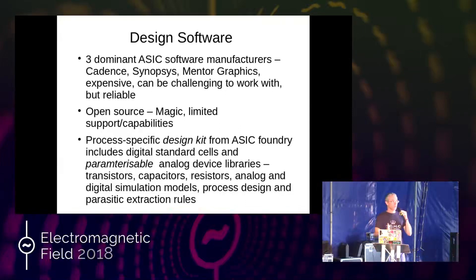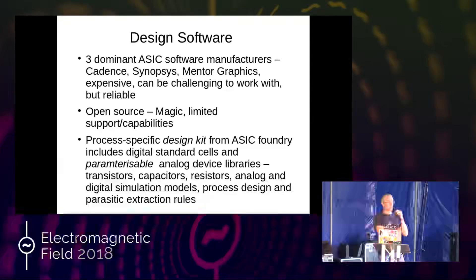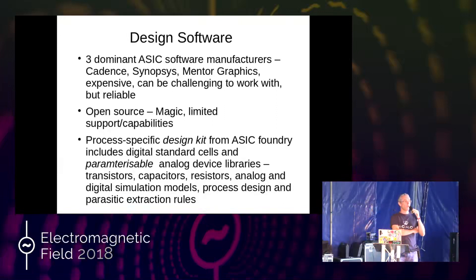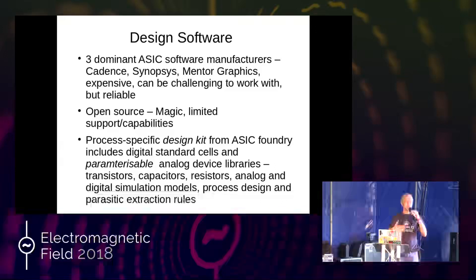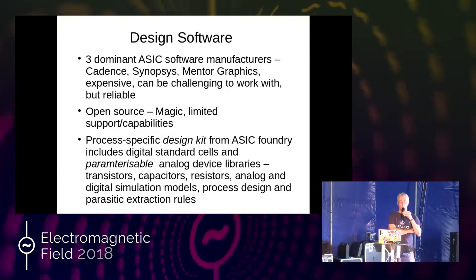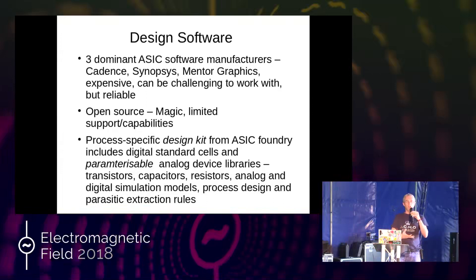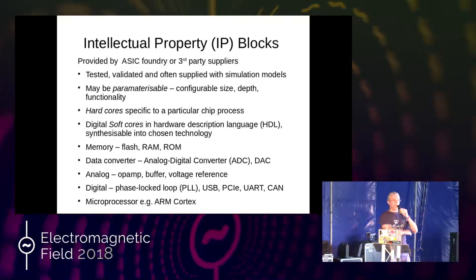Pretty much everyone uses a commercial package from one of the three major manufacturers. Alongside the design software is a design kit, supplied by your chip foundry and specific to the process. They'll give you simulation models, digital standard cells for synthesis, and design rules — things like gate width, track width, and spacing between structures. These manufacturability rules must be strictly adhered to; if you don't meet them, the foundry won't fabricate your chip. Many devices are parameterizable: you can define a transistor's width-to-length ratio for gain, or a resistor's resistance value.